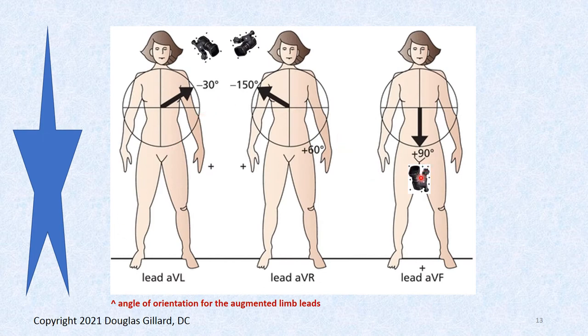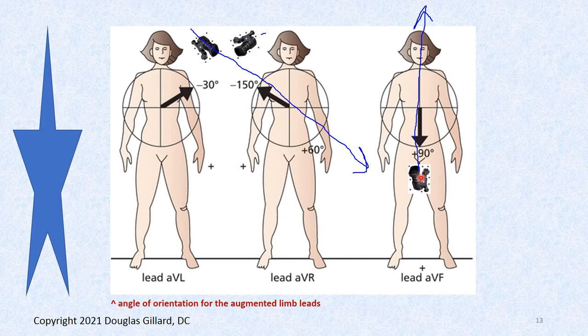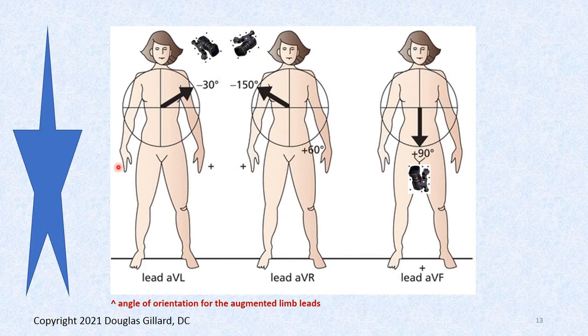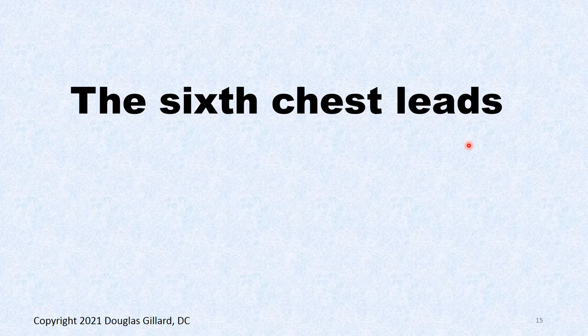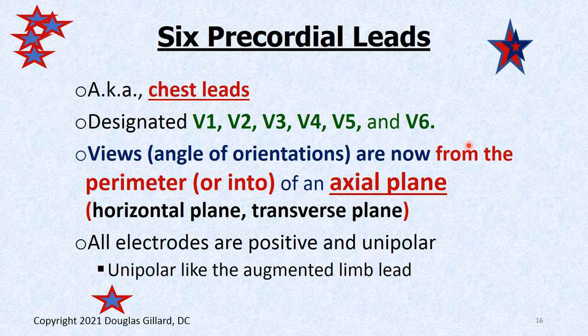You have to memorize this AOO wheel — you'll be completely lost if you don't. Now the chest leads: we won't talk much about them in this class, but they're designated V1, V2, V3, V4, V5, and V6. They also have angles of orientation, but they look into an axial plane, whereas limb leads look into a coronal plane.